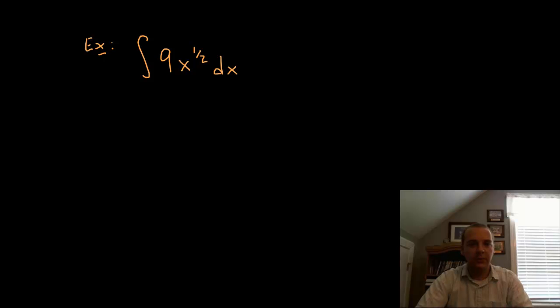Alright the last one. We have 9 times x to the 1 half. Technically this is still a power. It's a weird power, it's a fraction, but that's no matter. 9 would be a tag along constant. x to the 1 half plus 1 would make x to the 3 halves. And then technically we have divided by 3 halves. So there's nothing wrong with what I've just written here, but in a practical sense this is not very good.